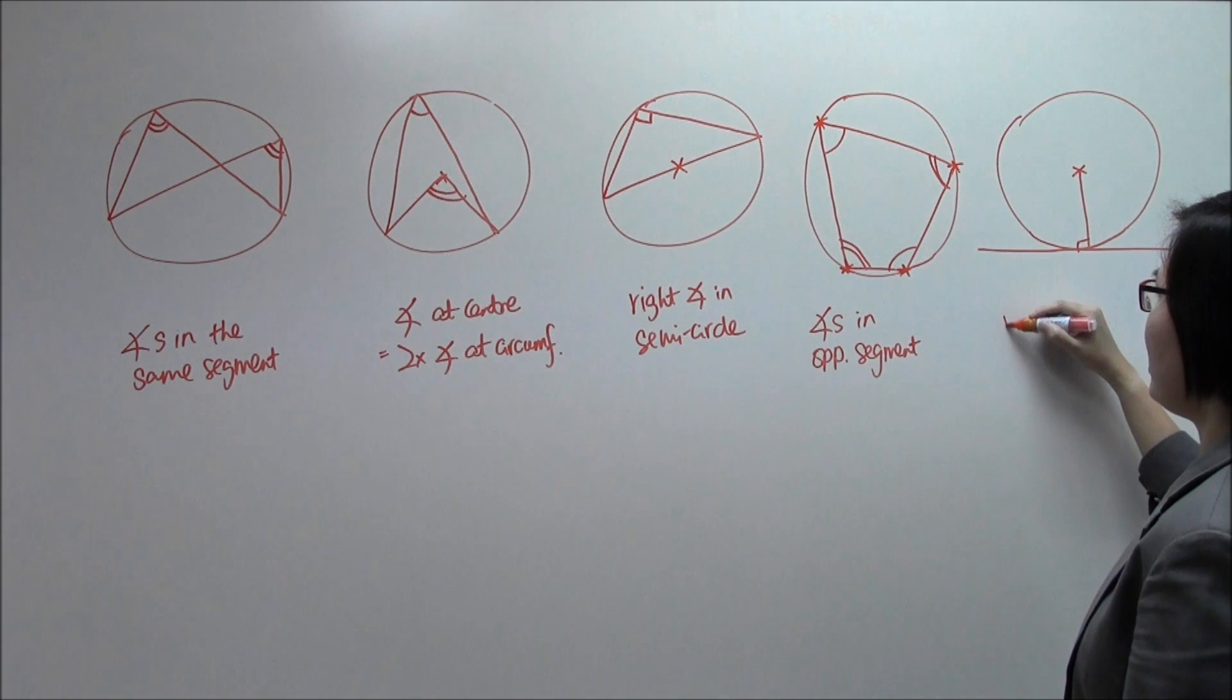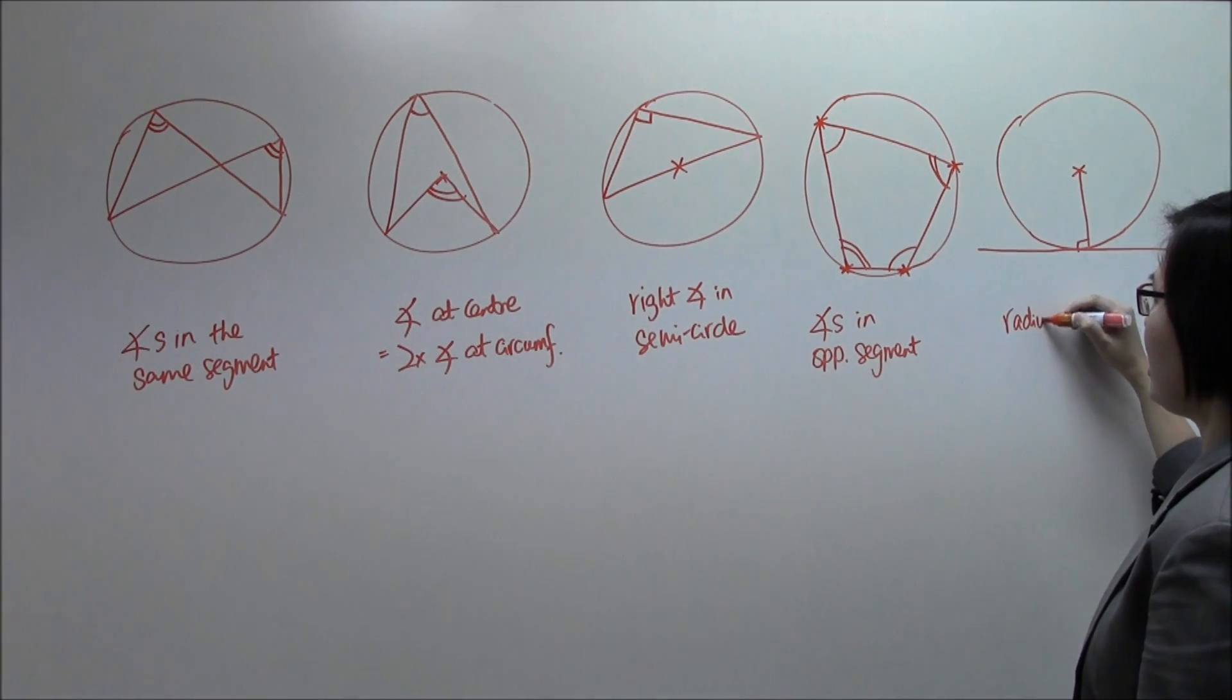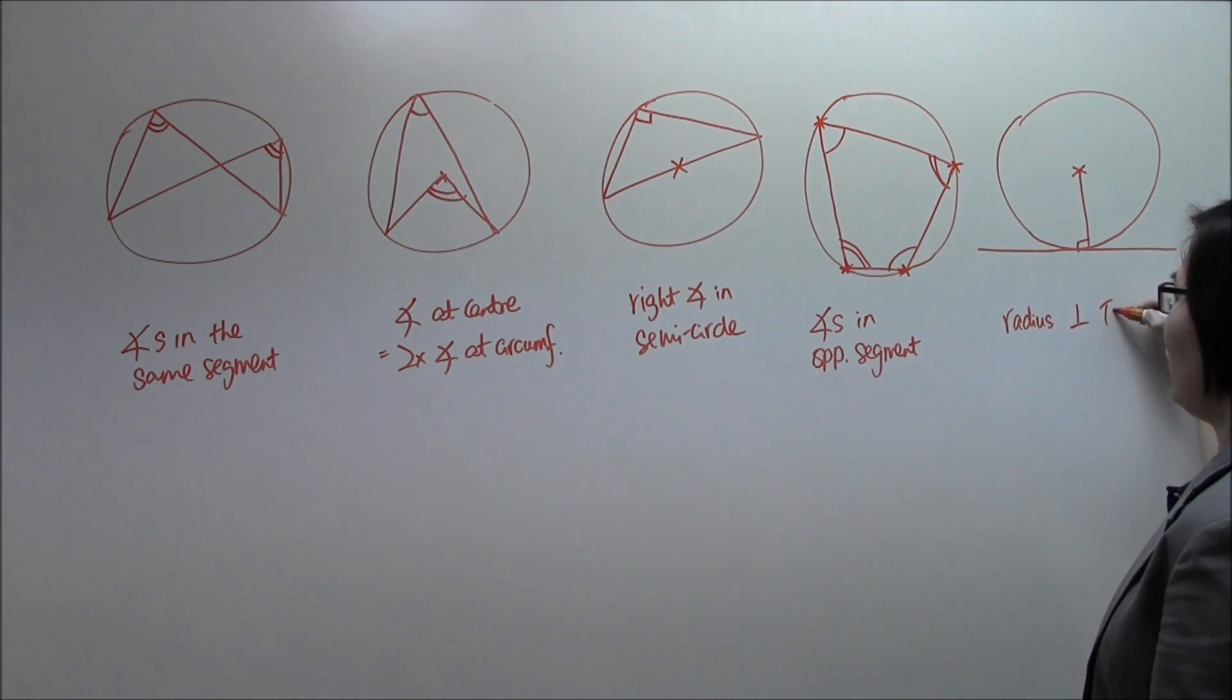So, this property is radius perpendicular to tangent.